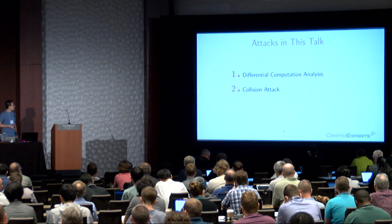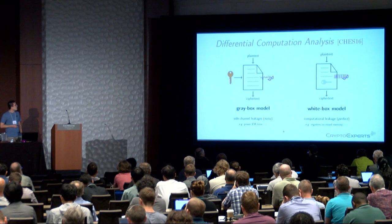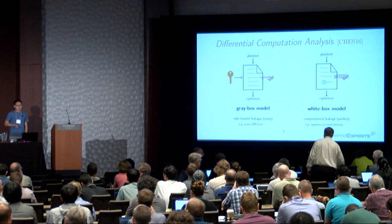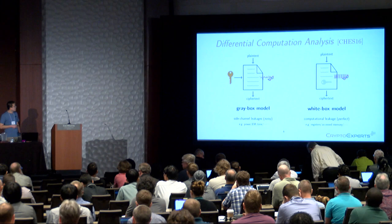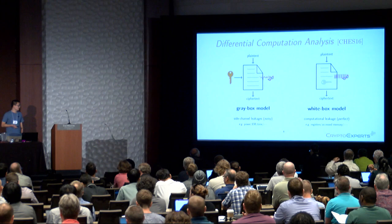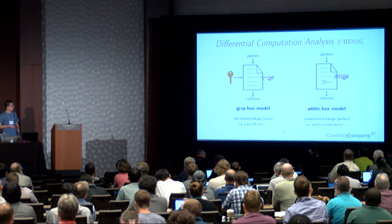This talk covers attacks against this kind of implementation, including differential computation analysis (DCA) and the clash attack. DCA is actually just the adaptation of DPA techniques into the white box context. The difference is that in side-channel attacks we use noisy leakage like power consumption and electromagnetic emanation, but in the white box setting we use exactly what is processed during execution — we call this a computational leakage, which could be memory values accessed or register values.